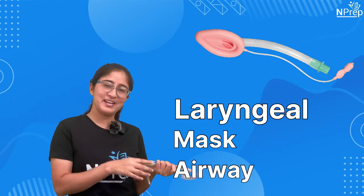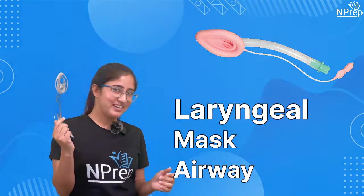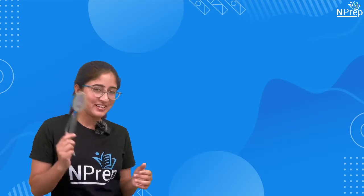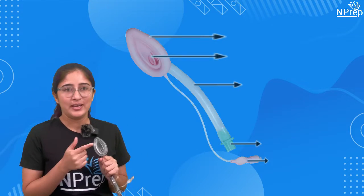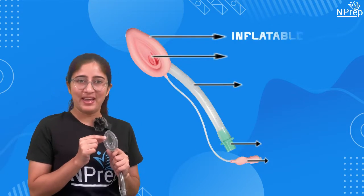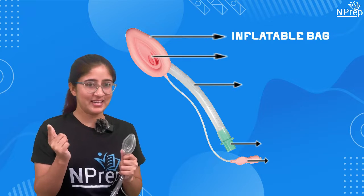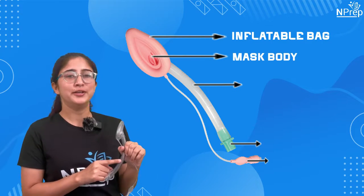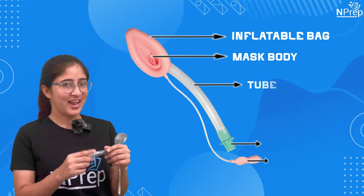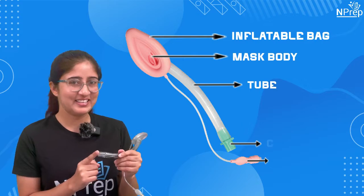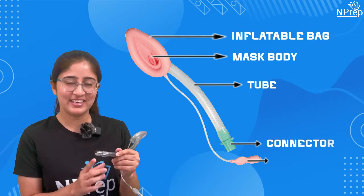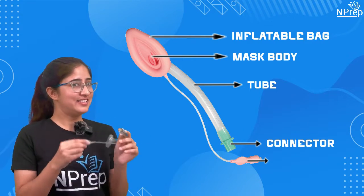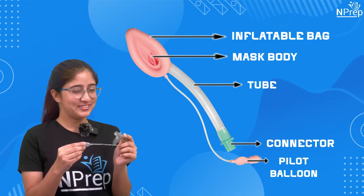Let's learn about its parts. First, inflatable bag. Second, mask body. Third, tube. And lastly, the connector. And this is the pilot balloon.